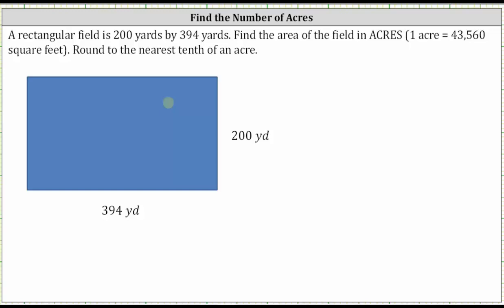Because we are given the conversion of one acre equals 43,560 square feet, we need to find the area of the field in square feet, not square yards.